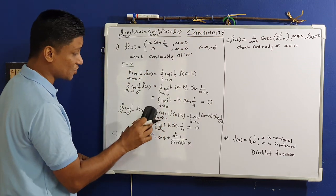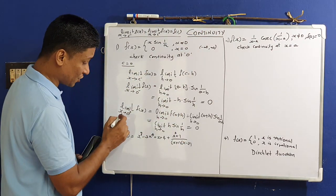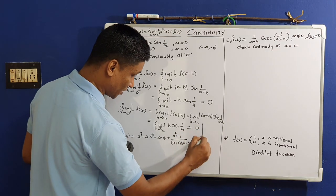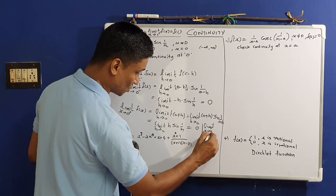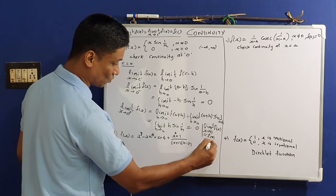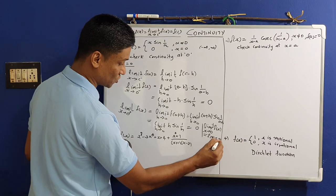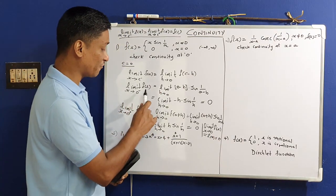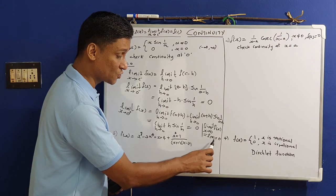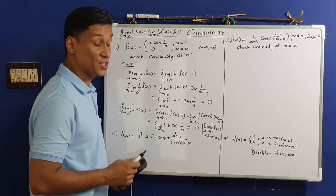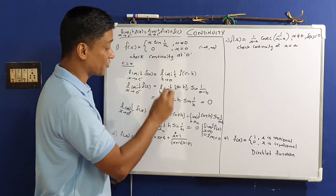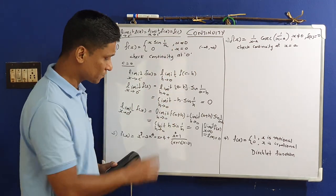We have got: limit x tends to 0⁻ of f(x) equals 0, and limit x tends to 0⁺ of f(x) is also 0. The value of f(0) is also 0. Therefore, this function is continuous at the point x equal to 0. Both limits and the function value are equal. So that is our first problem.